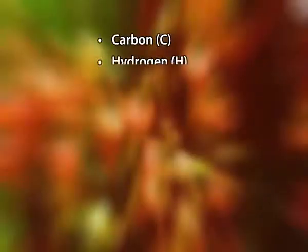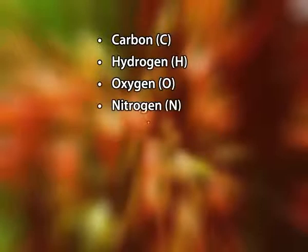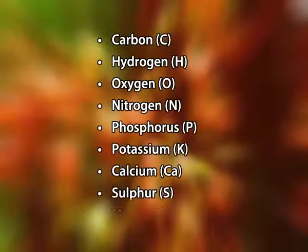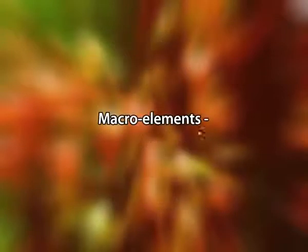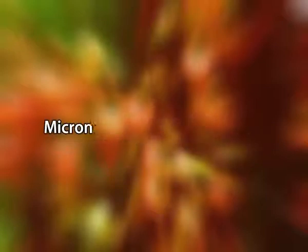These nutrients are divided into two groups based on the quantity required by plants. The first group is macronutrients or macro elements, required in large quantities. These include carbon, hydrogen, oxygen, nitrogen, phosphorus, potassium, calcium, sulfur, and magnesium — also known as major elements. The next group is micronutrients or micro elements, required in small quantities and also known as trace elements.